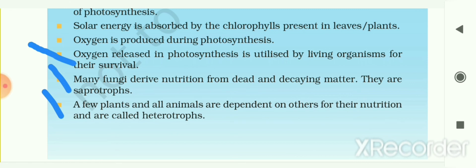We also studied symbiosis — some organisms live together and share shelter and nutrients, and this kind of interrelationship is known as symbiosis. One example is lichens, which is the symbiotic relationship between algae and fungus. The fungus provides shelter, water, and minerals to the algae, and in return the algae provides food prepared by the photosynthesis process. Both organisms benefit in this symbiotic relationship.